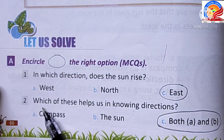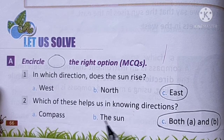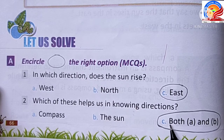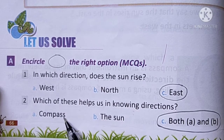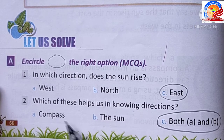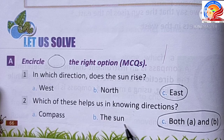Which of these helps us in knowing directions? Options: compass, the sun, both A and B. Both compass and the sun help us find directions. The answer is both A and B.